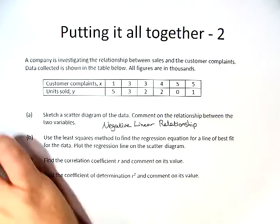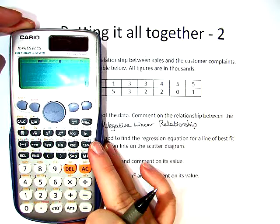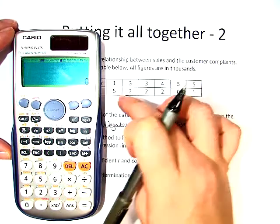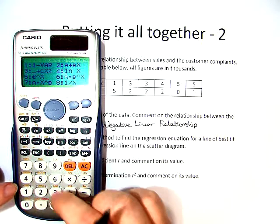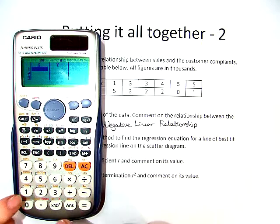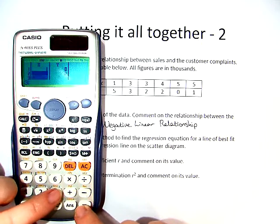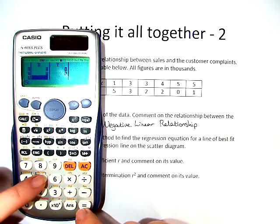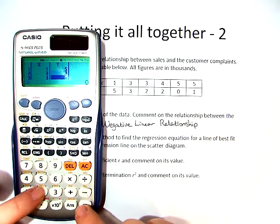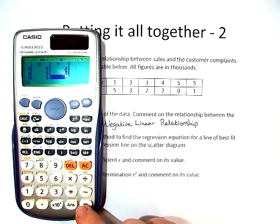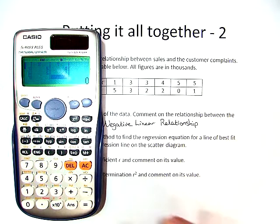We need to find the line of best fit, so we need to put x and y in here. X is the top, y is the bottom, so I hit mode. Notice I don't hit shift, I just hit mode: mode, stat, number 2, and we put in our x: 1, 3, 3, 4, 5, 5, and now our y: 5, 3, 2, 2, 0, 1. Perfect. Everything matches up. We hit AC.